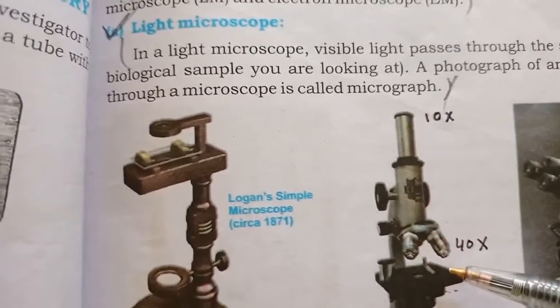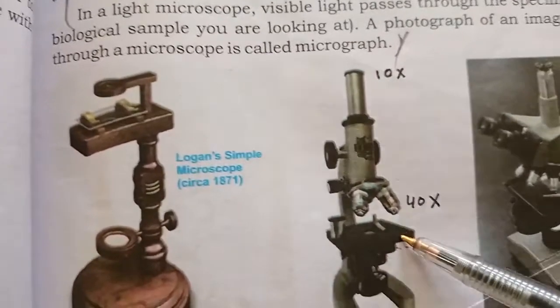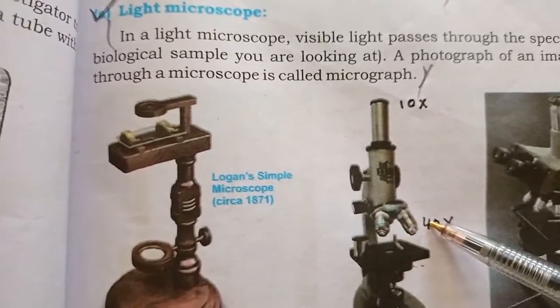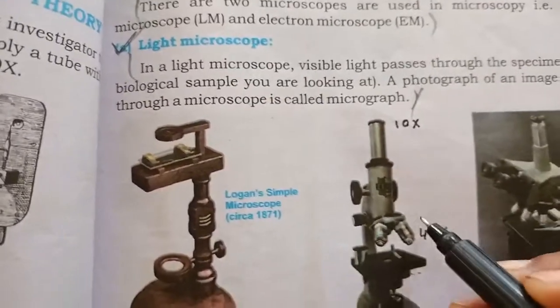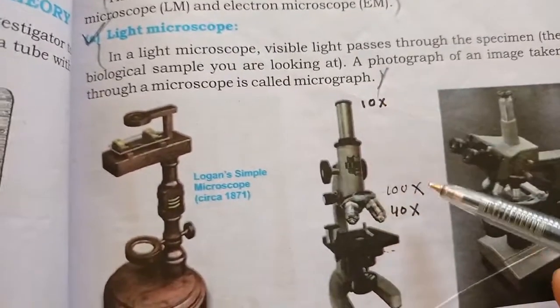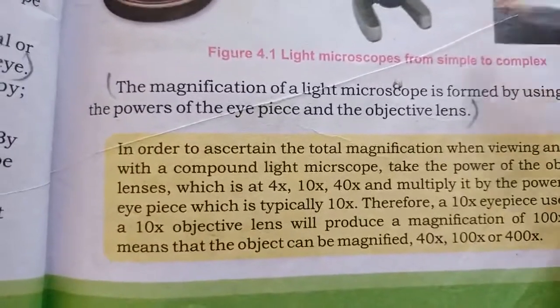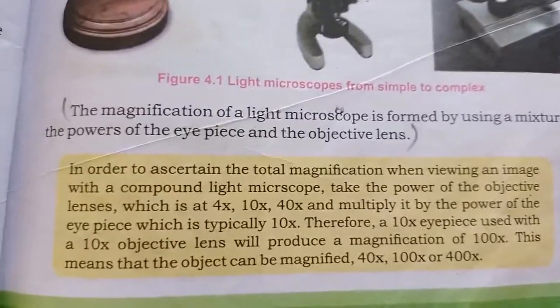For example, if the objective lens is 40x and your eyepiece is 10x, then we multiply them: the answer is 400. If you use 100x objective, multiply it by the eyepiece and you get 1000. On page 53 there is a yellow box with details — if we multiply the eyepiece and objective scores, we can find the total magnification of any microscope.